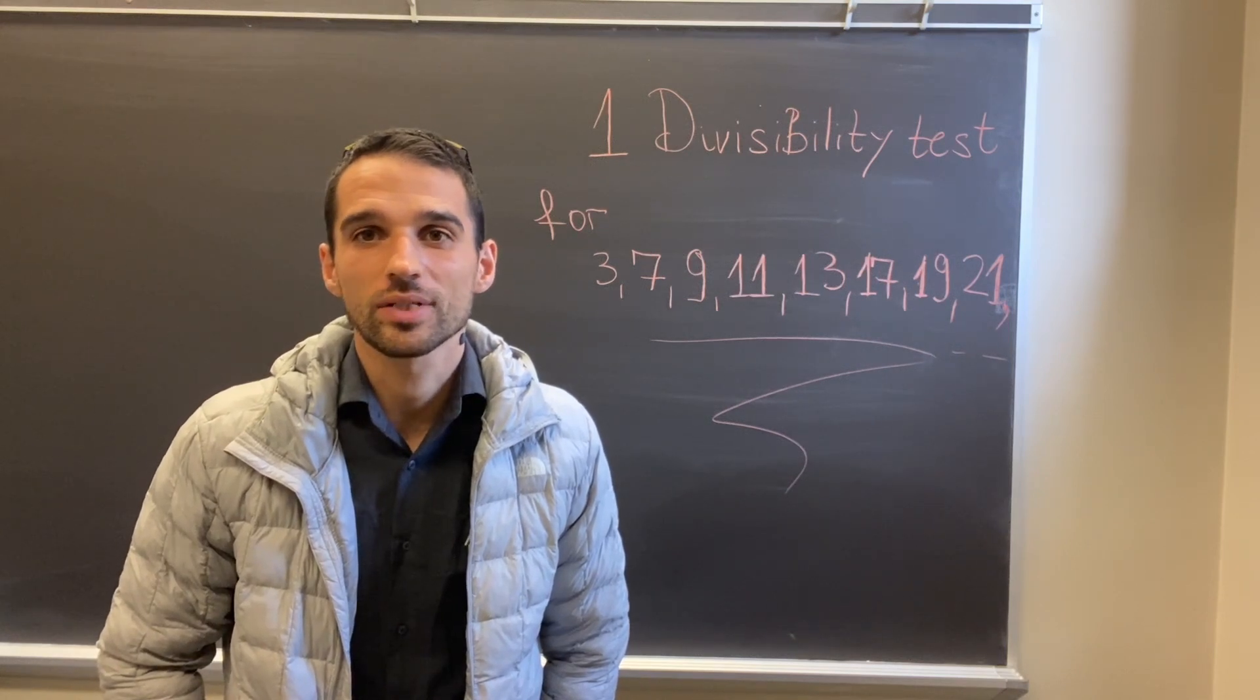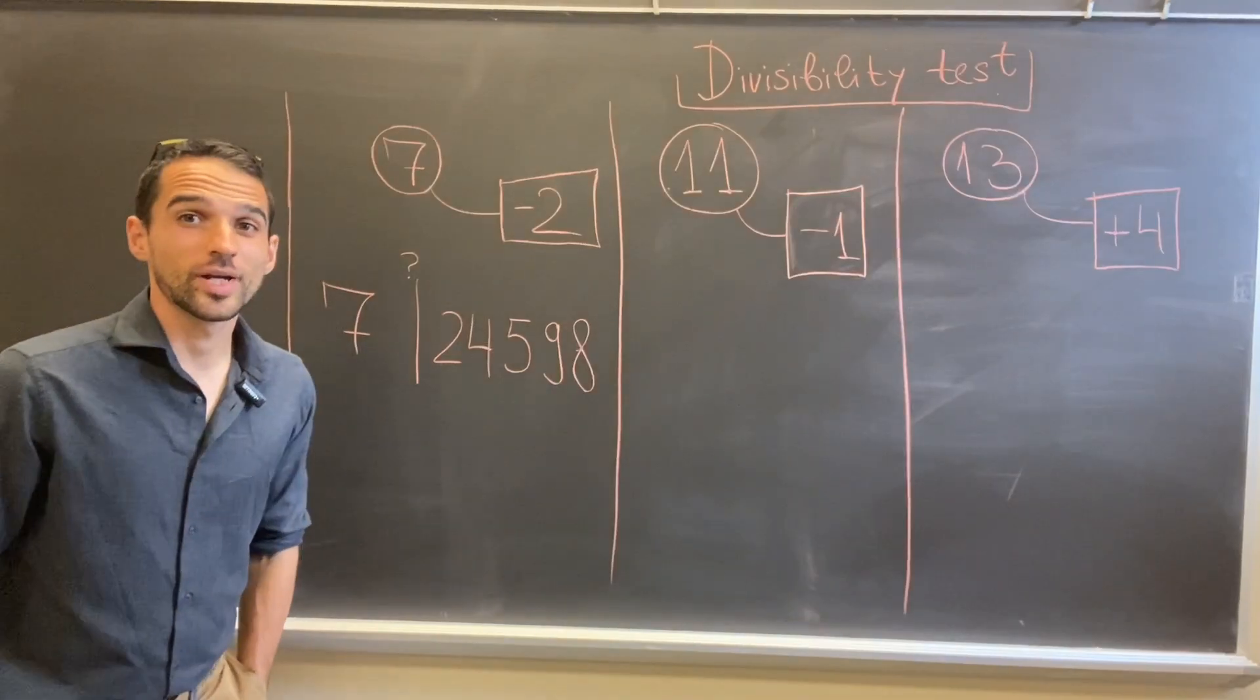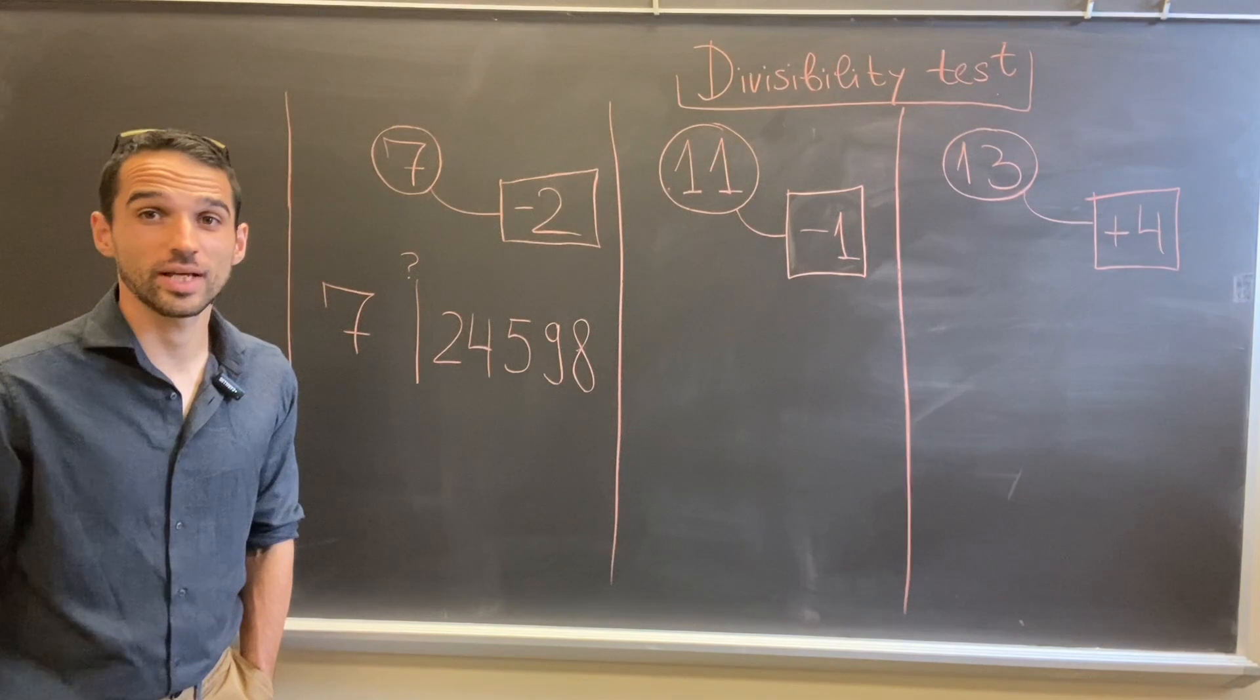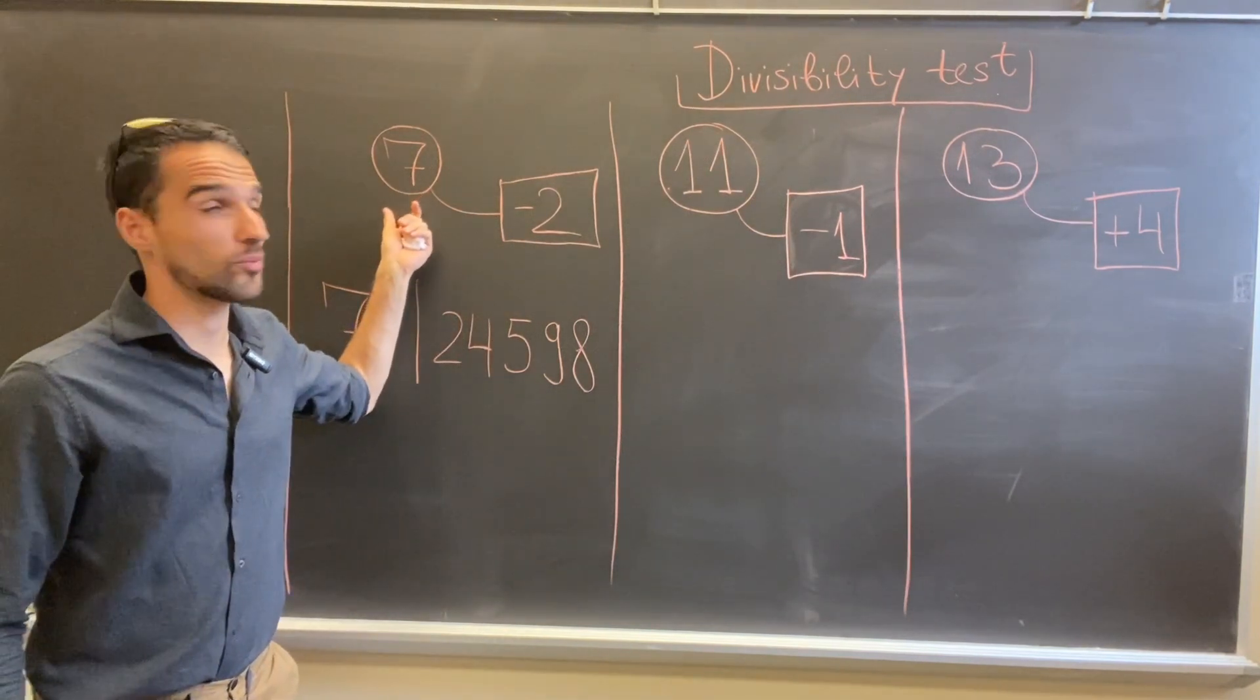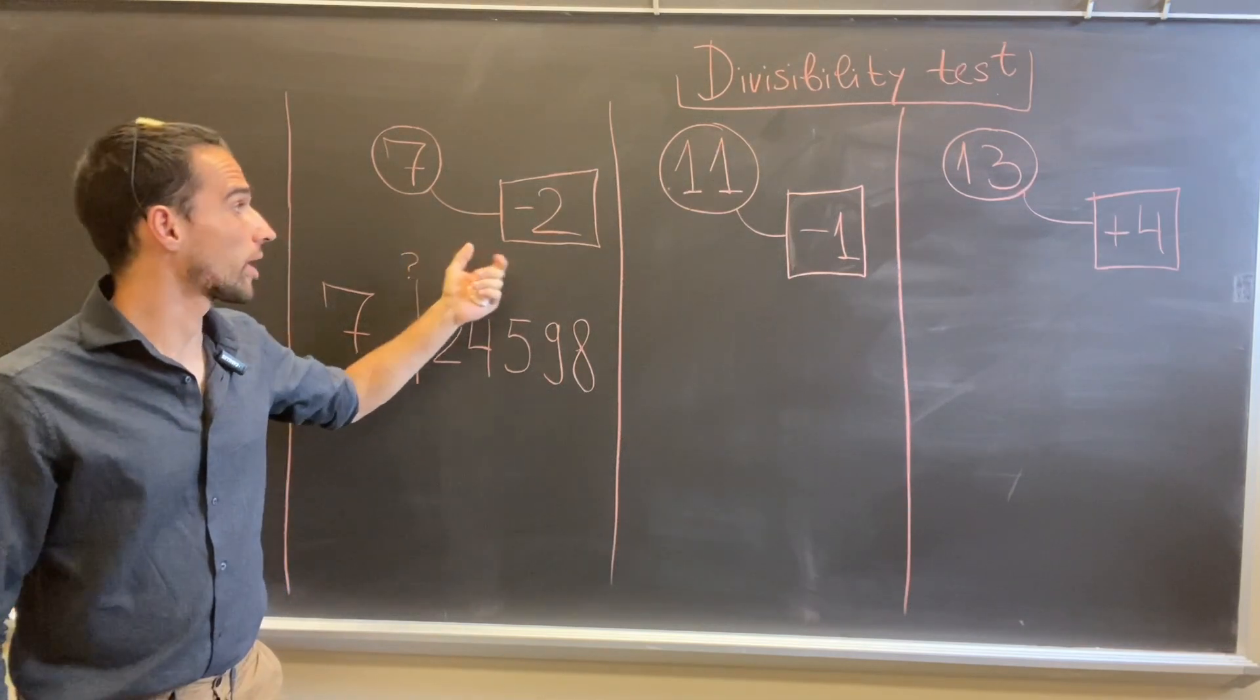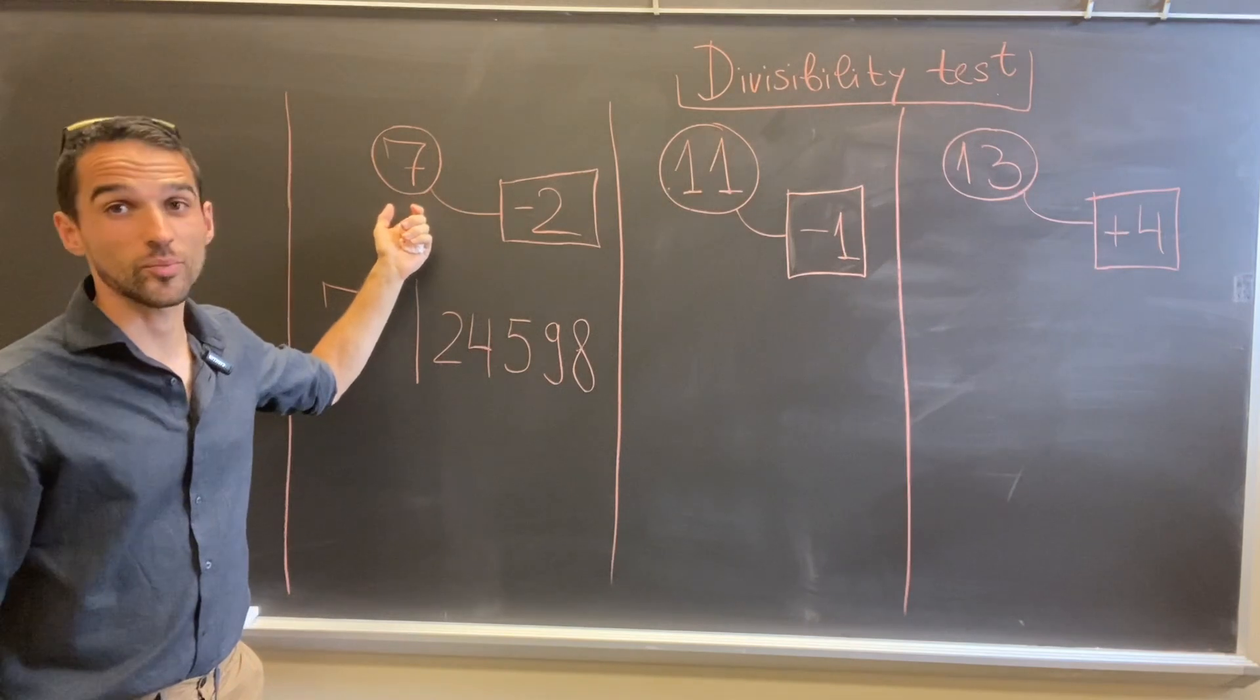Let's first see some examples and then I will explain why this weird thing works. We're gonna look at three examples in total. You'll see them on the board. As you can notice, for each of these numbers 7, 11, 13 that we'll test for divisibility, we have certain magical constants.